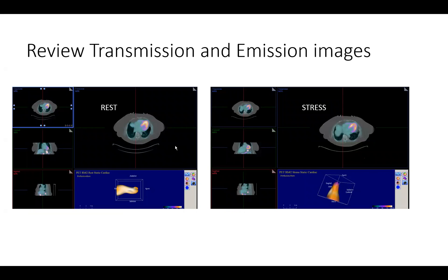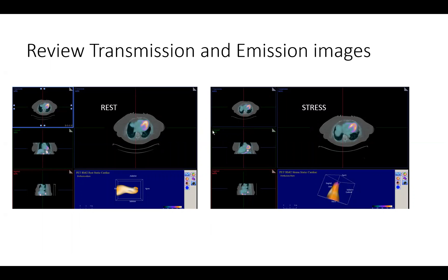Here are our familiar images for co-registration of the perfusion images and the CT images. On the left hand side we have the rest images, on the right hand side we have the stress images. With PET, all images are CT attenuation corrected, therefore you should look at both and make sure that registration is accurate in both instances, so you don't generate artifactual defects that can be misconstrued as perfusion defects.